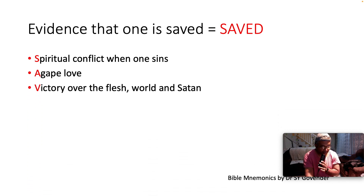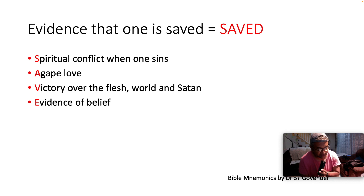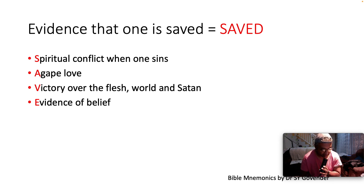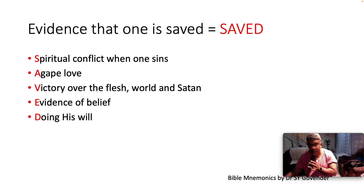V is victory over the flesh, world, and Satan. Romans 8:37 says, 'We are more than overcomers in Christ who strengthens us.' E is evidence of belief — 1 John 5:1: 'Whoever believes that Jesus Christ is born of God, and everyone who loves him who begot also loves him who is begotten of him.' D is doing his will — 1 John 3:24: 'He who keeps his commandments abides in him and he in them, and by this we know that he abides in us by the spirit whom he has given us.' We always seek to do the will of the Father and be sensitive to the still small voice of the Holy Spirit in our lives.